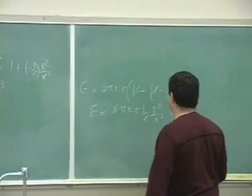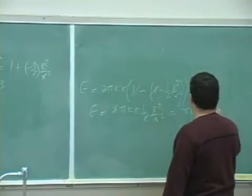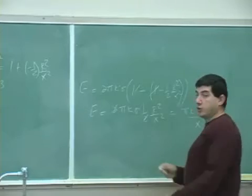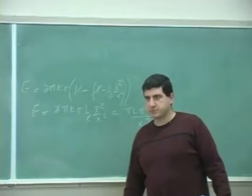2 and the 2 cancel, pi k sigma r squared over x squared. What should it look like? K q over x squared. Point charge.